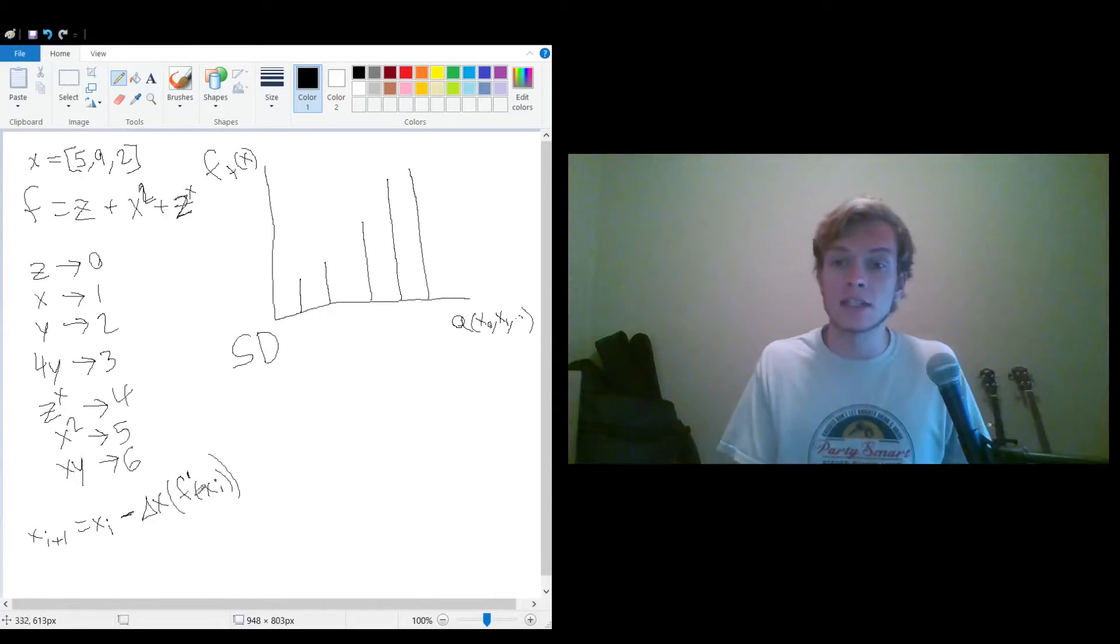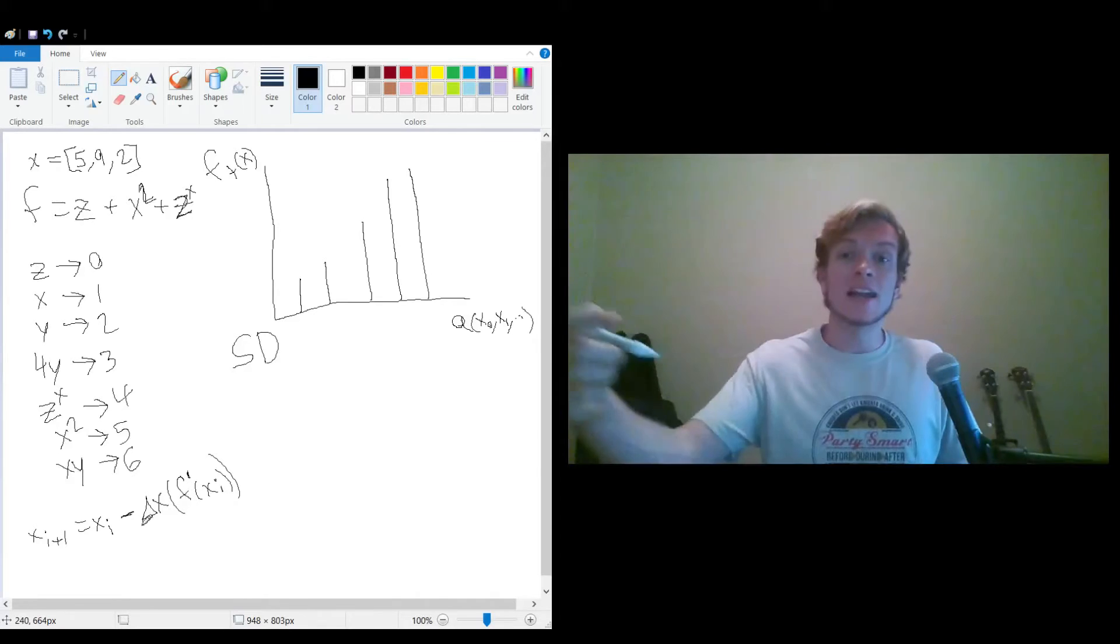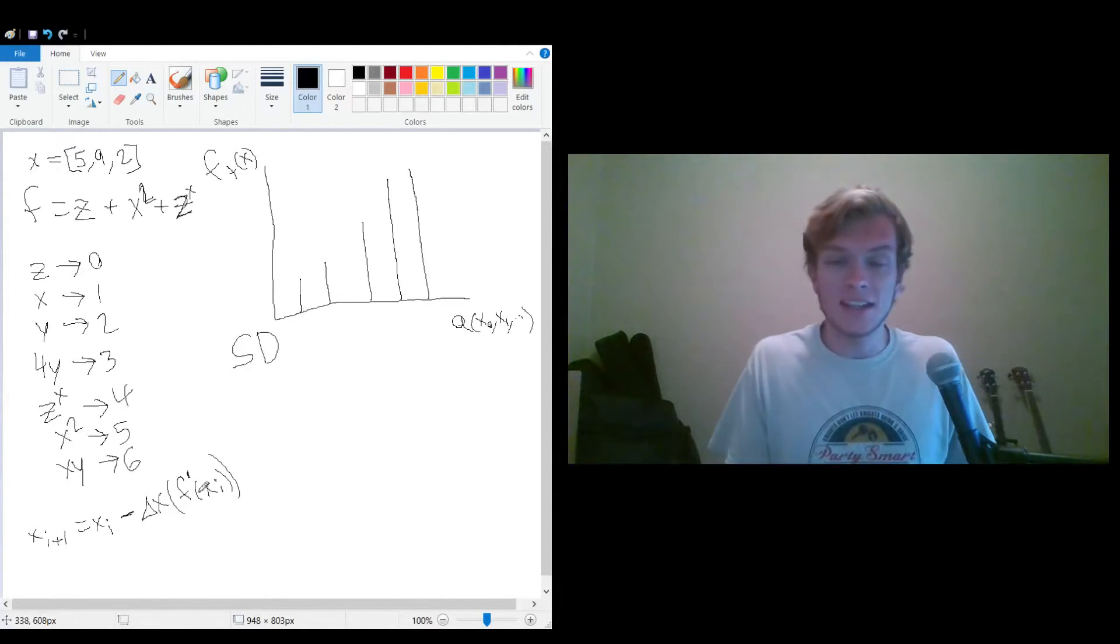So what it's essentially doing is it's checking what the slope is at that point. It's going in the opposite direction. So what this is essentially in terms of a multi-dimensional system is that this is the gradient. So it's going in the opposite of the gradient. The gradient is essentially like if you had a terrain that had a mountain, then the steepest direction would be straight up the mountain. So steepest descent means that we're going as fast as we can down the mountain.